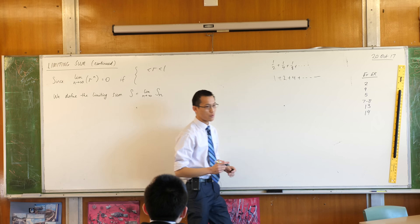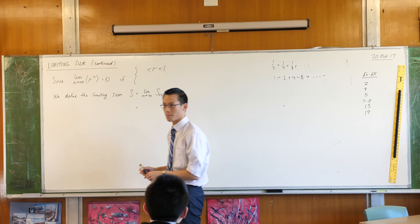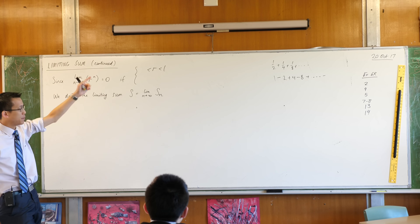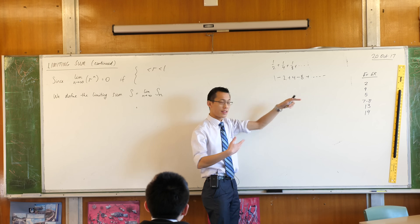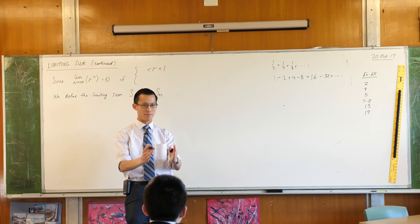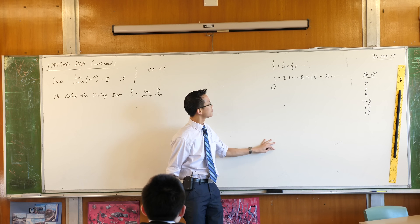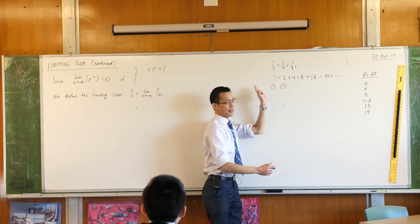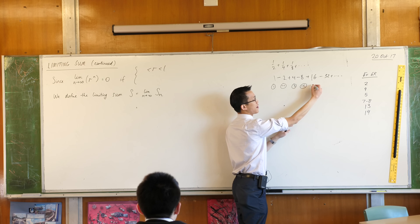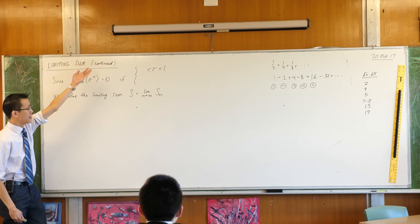For instance, if you look at a common GP with common ratio negative two - negative two is less than one, isn't it? But that's not going to have a limiting sum. Think about what happens with the partial sums: the first partial sum is just one, the second is negative one, the third is three, then negative five, then eleven. These partial sums aren't going toward anything, so we're not going to get a limiting sum. So this condition on its own is not enough.